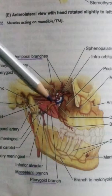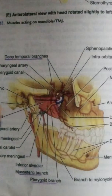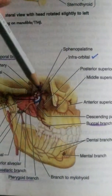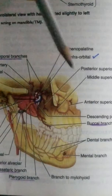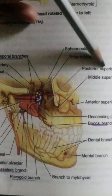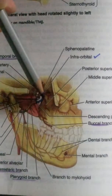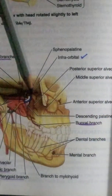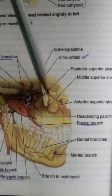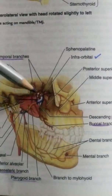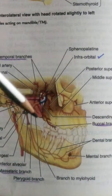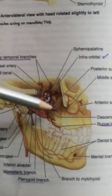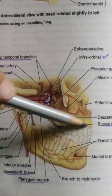Before entering the fossa, it gives two branches: the infraorbital branch and the posterior superior alveolar branch. So before entering, it gives the posterior superior alveolar and the infraorbital branch.